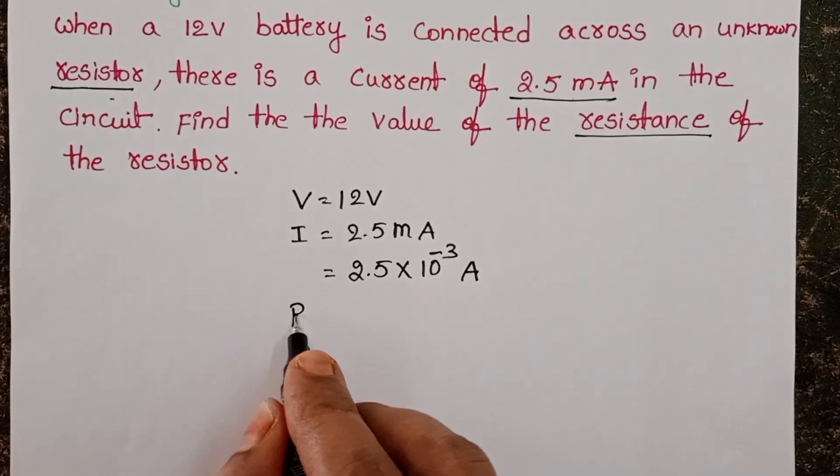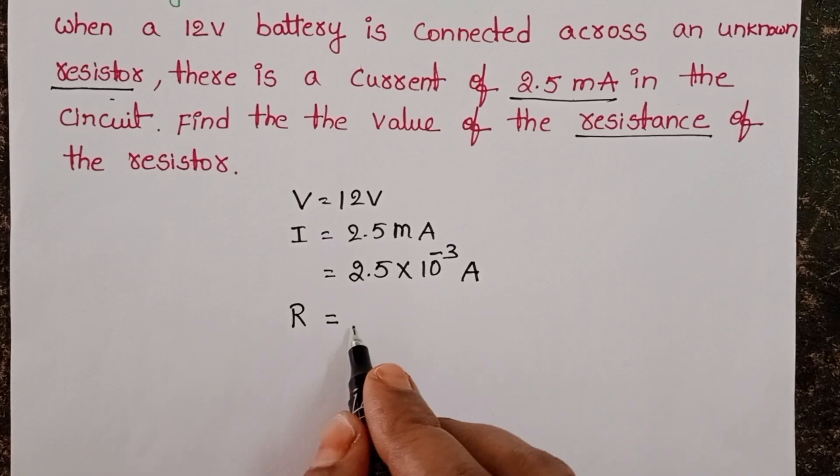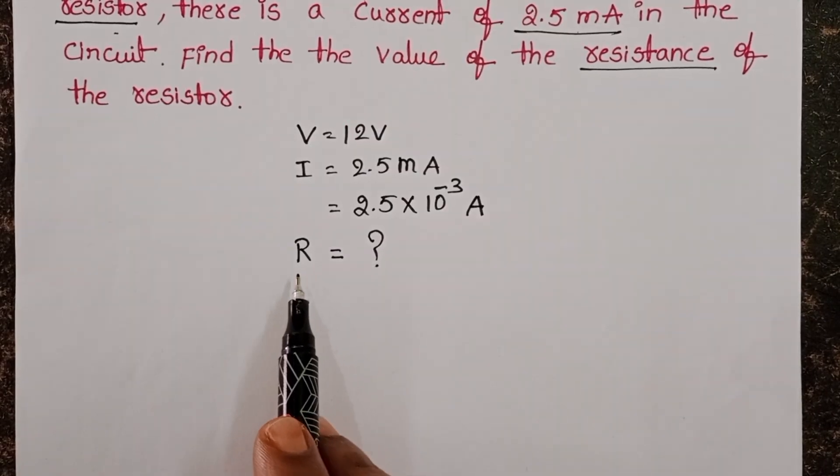In this circuit, we don't know the resistance of the resistor. Here we have to find the value of R.